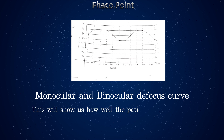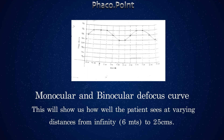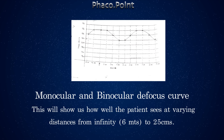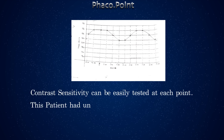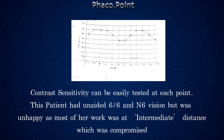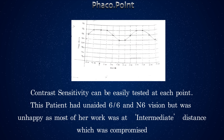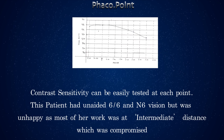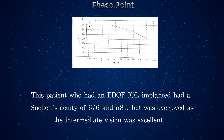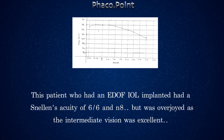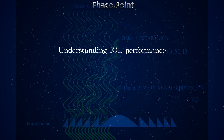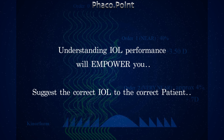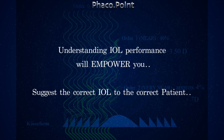Perform monocular and binocular defocus curves — it's easy to construct and has been discussed in a previous presentation. This will show how well the patient sees at varying distances from infinity at 6 meters to as close as 25 centimeters, with contrast sensitivity also checked at each distance. For example, a patient with a diffractive bifocal IOL had 6/6 and N6 acuity but was unhappy because of compromised intermediate vision, as most of her work was at that distance. Conversely, a patient with an EDOF IOL had only 6/6 and N8 acuity but was overjoyed because intermediate vision was excellent. Understanding IOL performance truly empowers you to suggest the correct lens for the correct patient, and although unhappy patients cannot be completely avoided, you can reduce them to a bare minimum.